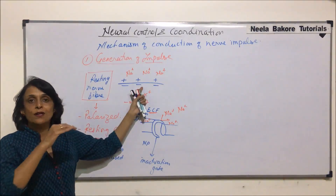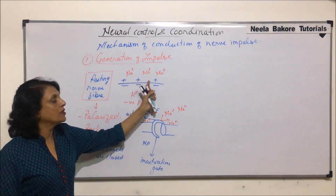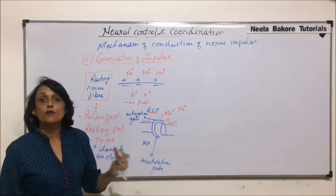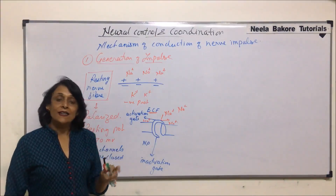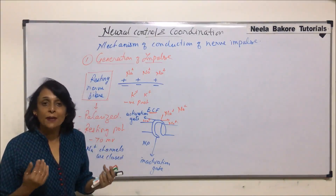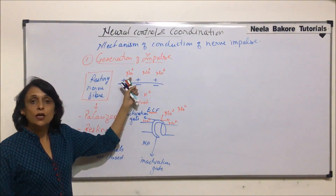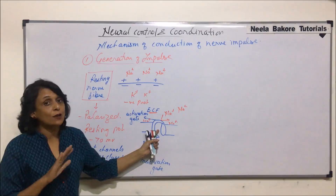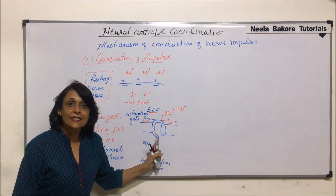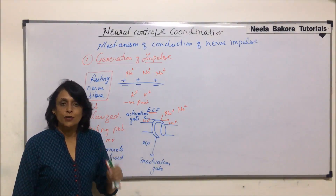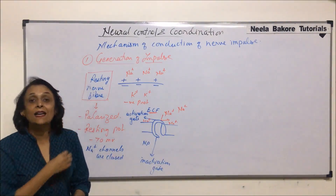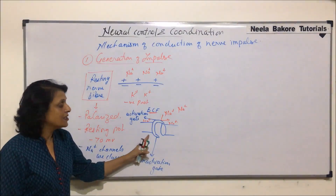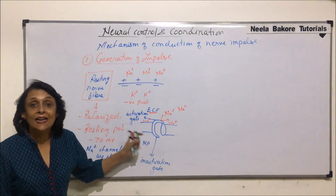We can draw this by showing a simple line with charges — electropositive on the outer side — those charges being due to sodium ions. Why are these sodium ions outside? Because the gates through which sodium can come in are closed. These sodium channels and potassium channels are gates through which ions pass, and they operate at a specific voltage.